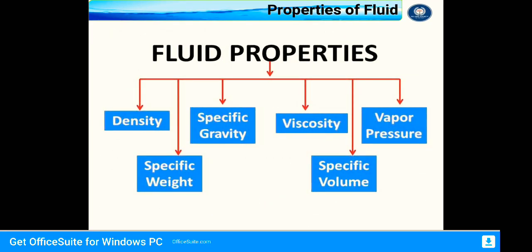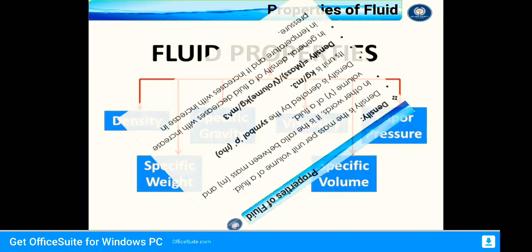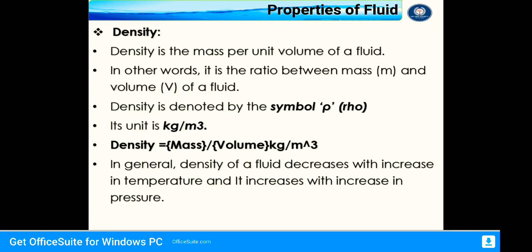Next is properties of fluid. Fluids have six to seven properties: density, temperature, specific weight, specific gravity, viscosity, specific volume, and vapor pressure. The first property is density. Density is the mass per unit volume of a fluid — it is the ratio of mass to volume. Density is denoted by the symbol rho, its unit is kilogram per meter cube, and the formula is density equals mass divided by volume.